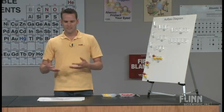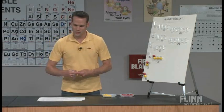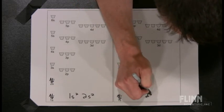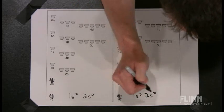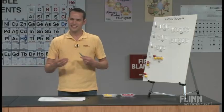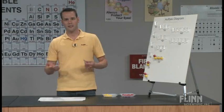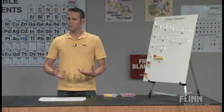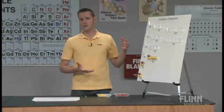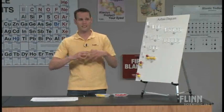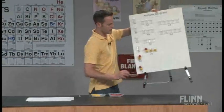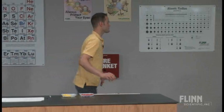I leave the f orbitals off the diagram since it's well beyond what I cover in intro chemistry. Once students understand the filling pattern, we also make sure they can write electron configurations. For example, oxygen is written 1s2, 2s2, 2p4. They practice writing and recognizing the pattern for electron configurations.